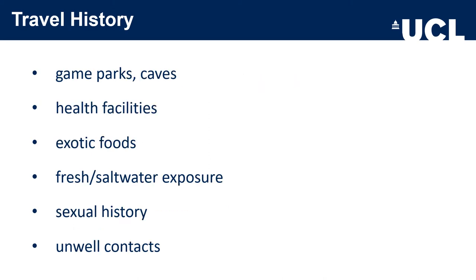Other important things to ask about include game parks, caving, and visits to health facilities — did they require any medical intervention, surgery, blood transfusion, or intravenous injections? Ask about exotic foods, fresh or salt water exposures — schistosomiasis in Lake Victoria is a classic example — sexual history, and any unwell contacts whilst travelling.